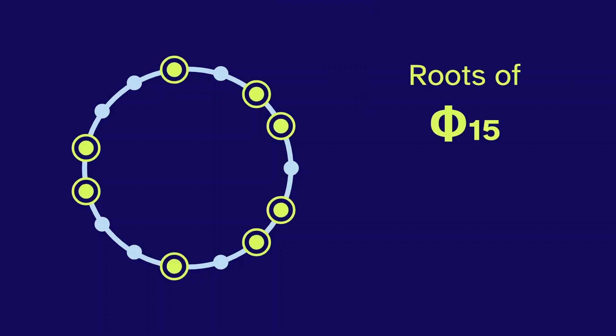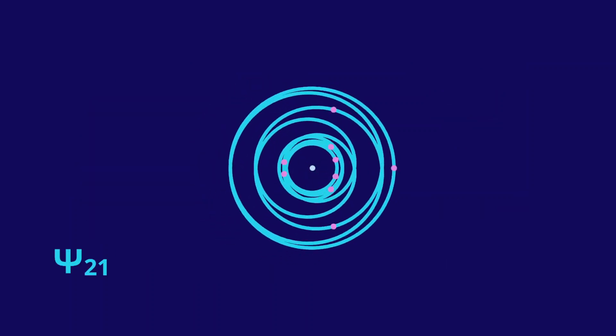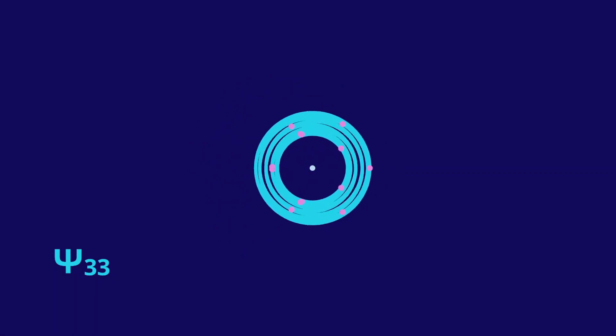And we can go further with these points. We can use them as the roots for their own polynomial. Going back to those 15 evenly spaced points, the 8 points that are new to 15 are the roots of the 15th cyclotomic, and then the other 7 are the roots of the 15th inverse cyclotomic. Here is the 21st inverse cyclotomic, and the 33rd.